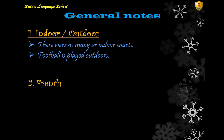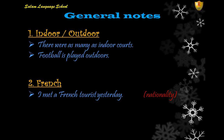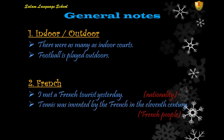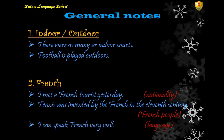Number two: the word 'French'. We can use this word for a language, a nationality, or a group of people. For example: 'I met a French tourist yesterday' — nationality. 'Tennis was invented by the French in the 11th century' — a group of people. Using 'the' plus an adjective refers to a group, like 'the blind' meaning blind people. And 'I can speak French very well' — French as a language.